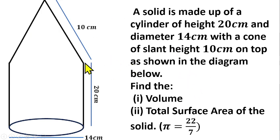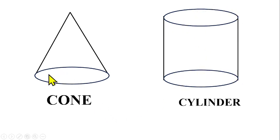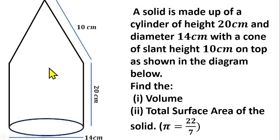Before we solve this question, I want to show you the two shapes separated. This is the cone — it has a circular base. This is the cylinder — the cylinder also has a circular top and a circular base. When this cone is mounted upon this cylinder, you discover that the circular base of the cone will fit on top of the circular top of the cylinder.